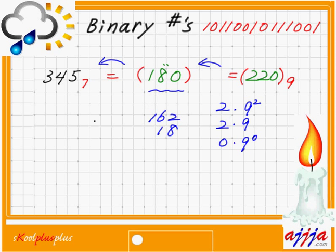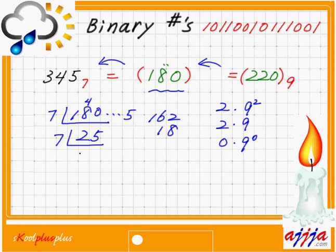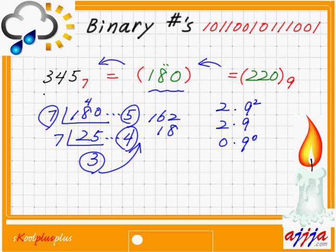Now convert decimal 180 back to base number 7 to double-check: 180 divided by 7 is 25 remainder 5. Wait — 7 goes twice into 18: 14, so 4 left. Then 40 divided by 7 is 5 times, 5 left. Then divide by 7: 3 times, 4 left. Write backward: 3, 4, 5 — base number 7. Exactly right!